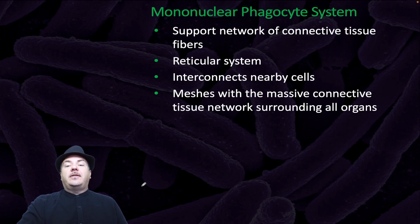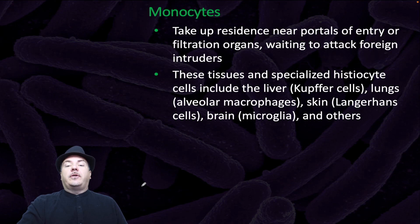The mononuclear phagocyte system is a support network of connective tissue fibers. It is a reticular system that interconnects nearby cells and meshes with a massive connective tissue network surrounding all organs. Monocytes take up residence near portals of entry or filtration organs, waiting to attack foreign intruders. These tissues and specialized histiocyte cells include the liver with Kupffer cells, lungs with alveolar macrophages, skin with Langerhans cells, brain with microglia, and others.